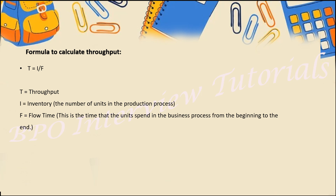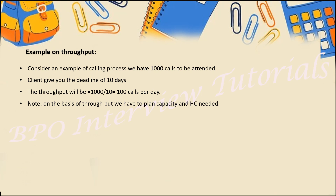The throughput formula is very easy: Throughput = I divided by F, where I means inventory — how much volume we have — and F means flow rate or deadline we have received. For example, in a calling process where we have a deadline to close 1,000 calls in 10 days: 1,000 calls divided by 10 days equals 100 calls per day. That is the throughput — 100 calls per day. To manage this, we must ensure all impacting factors are cleared out and capacity utilization is kept in mind.